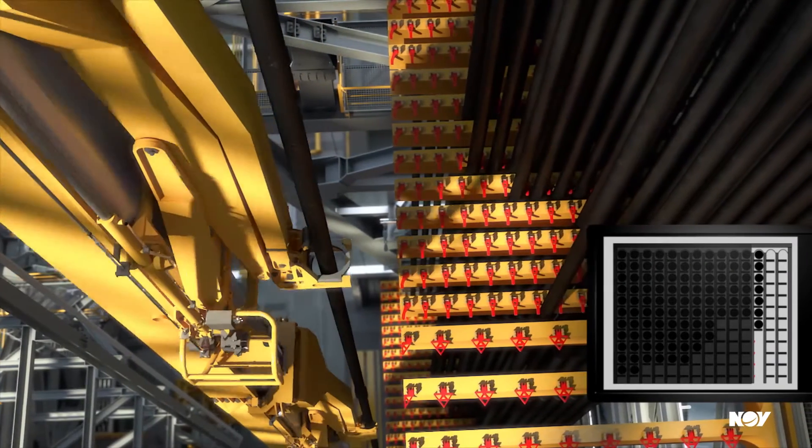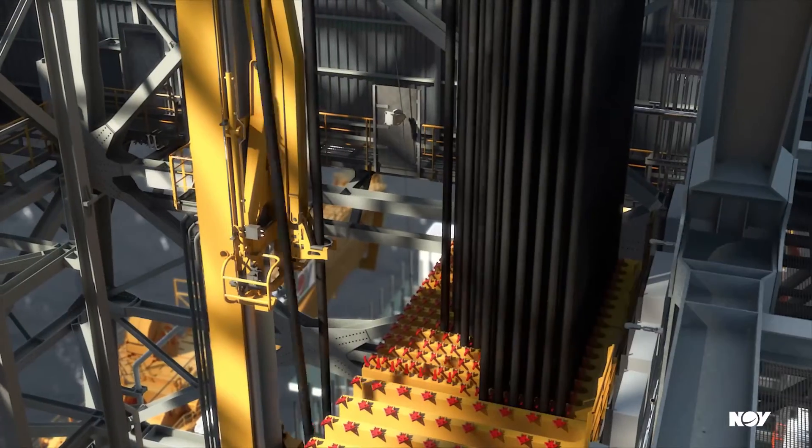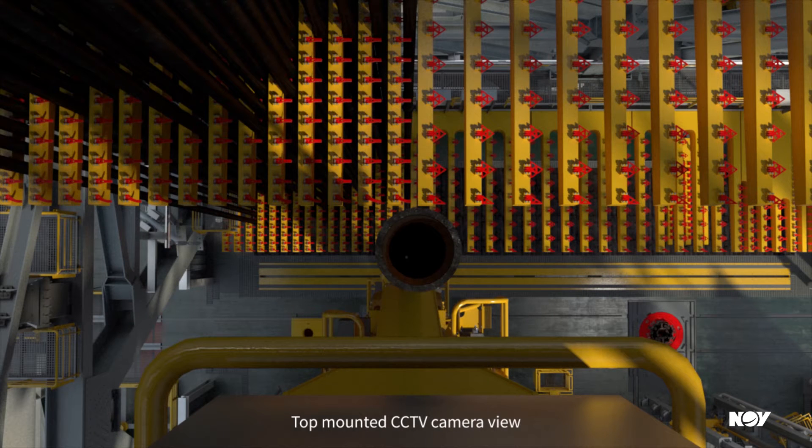Latch position verification is normally done by the operator with the top-mounted CCTV camera on the pipe handler. However, even with the help of the CCTV camera, ghost pipes can be hard for the operator to spot.